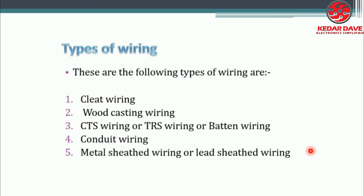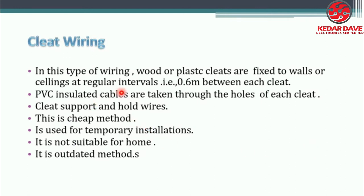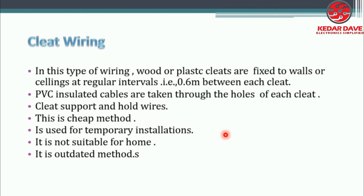The first type we have studied is cleat wiring. In this type of wiring, wood or plastic cleats are fixed to walls or ceilings at regular intervals — for example, 0.6 meters between each cleat. We generally use wood or plastic cleats. The cleat has a casing and capping structure.